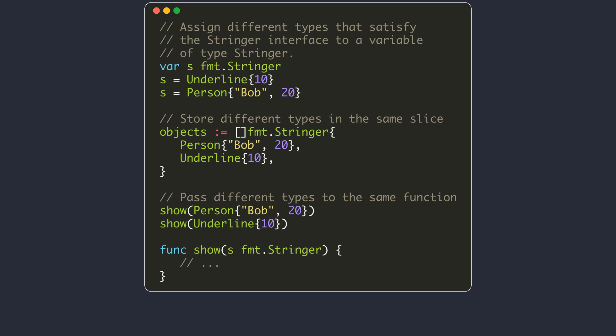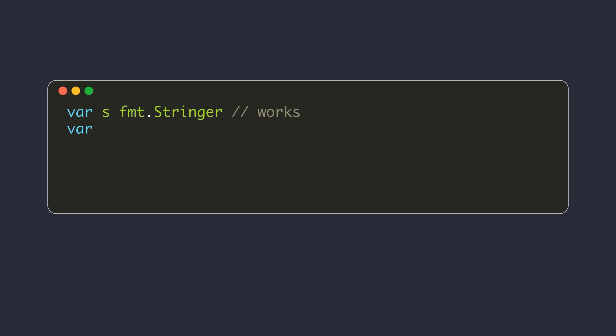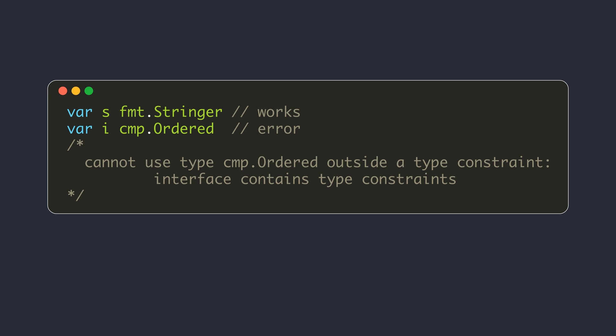Interface types make Go support value boxing. We will learn what value boxing is and how it works in Go in more detail in this video. With value boxing, Go supports reflection and polymorphism. The Go language started supporting custom generics since version 1.18. Interface types are used to specify type constraints when using generics.